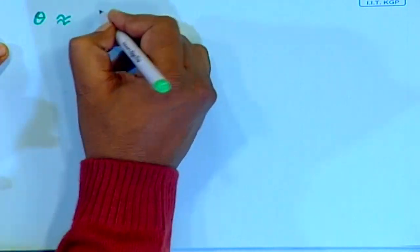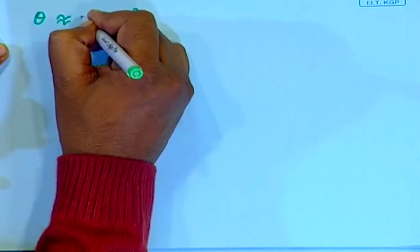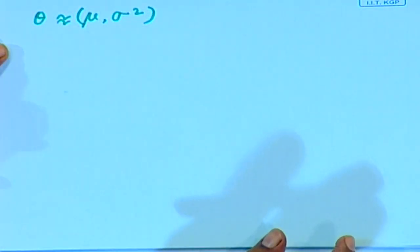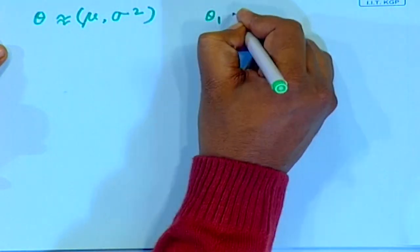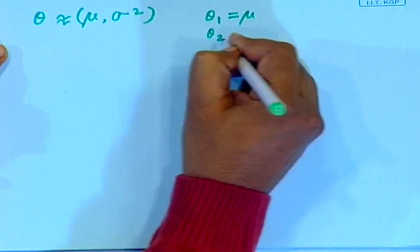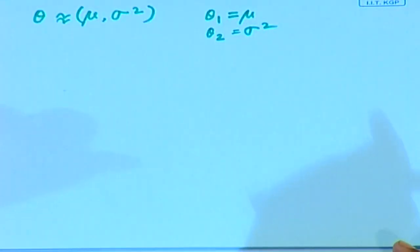Now let us take the more general case, assuming that neither mu nor sigma-squared is known — both mean and variance are unknown. Here, the parameter vector theta has two components: theta_1 = mu and theta_2 = sigma-squared. For simplicity, I am considering the univariate case; for the multivariate case, the number of operations will be more, but the procedure remains the same.